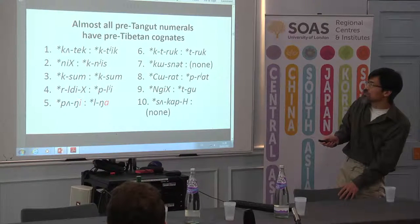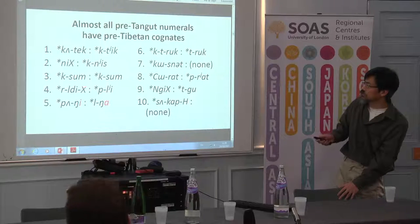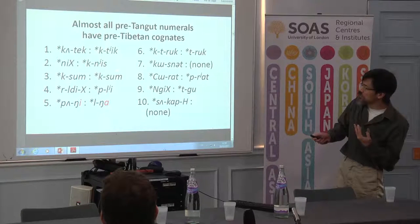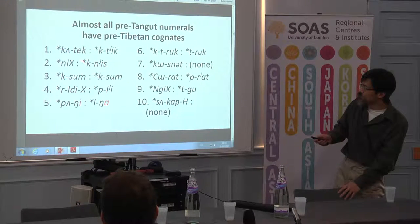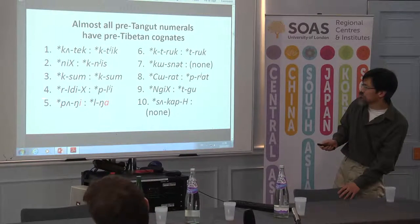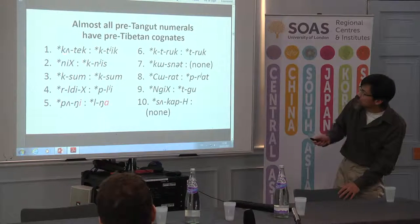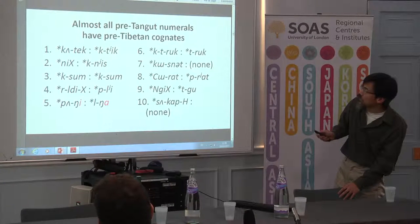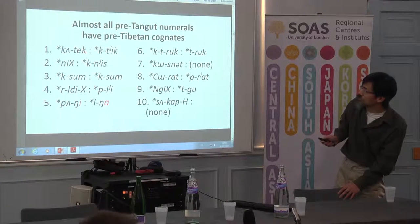Now, I showed that there were only a few obviously cognate pairs, but if you trace back the history of the Tibetan numerals — which I did with Nathan's help — and trace back the earlier forms of the Tangut numerals using a system I published five years ago, you can see that most of them, except for seven and ten which are completely unrelated, are actually cognates. The resemblances are pretty good in most cases, except five is still a problem.